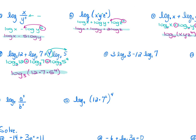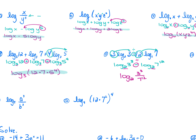For number 9: 3·log₂(3) − 12·log₂(7). Subtraction means division, but first the coefficients become powers: log₂(3³) − log₂(7¹²). Subtraction with the same base means division, so it becomes log₂(3³/7¹²). You can leave it as 3 cubed and 7 to the 12th — no need to multiply out.